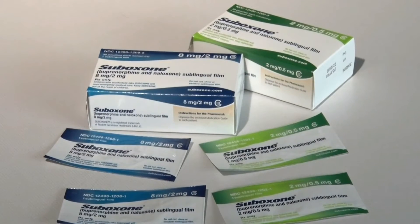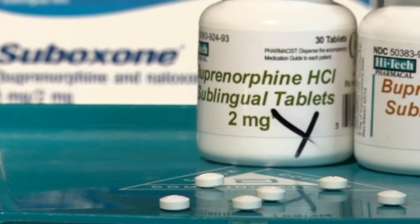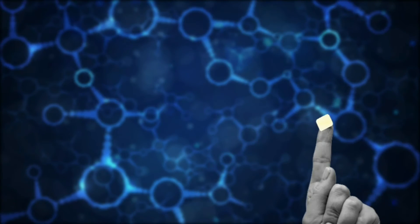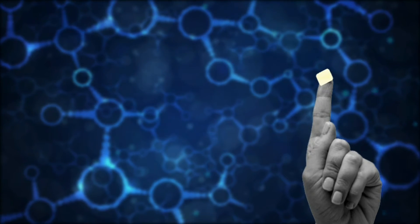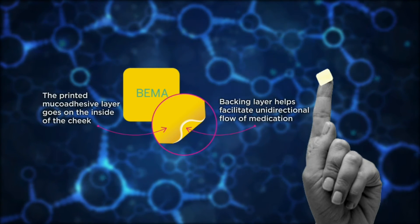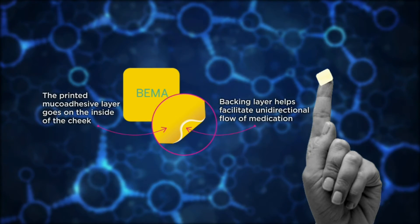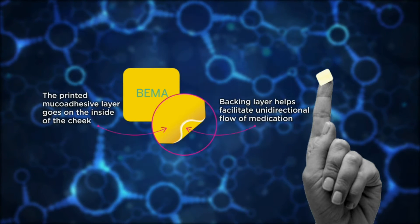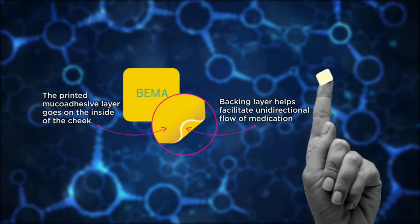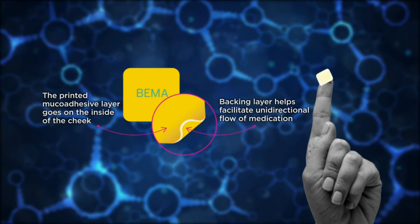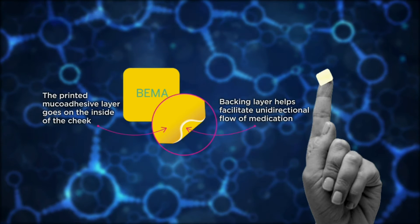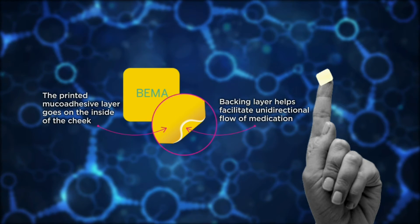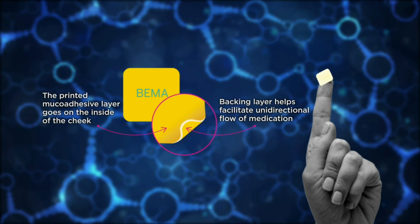Buprenorphine naloxone formulations are usually administered in a sublingual tablet or buccal film, but this manuscript talks about a new delivery system. This new formulation uses a bilayered, bioerodible, mucoadhesive buccal delivery technology. The new technology promotes unidirectional flow across the mucosal membrane, increasing the bioavailability of buprenorphine. The unidirectional flow is due to a backing layer that promotes flow in only the mucosal direction.